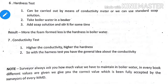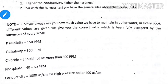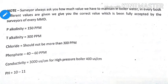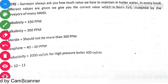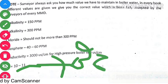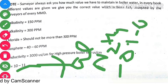The last point is the conductivity test. Higher hardness gives a general indication of conductivity. The standard values to maintain in the boiler water are: P-alkalinity minimum 150 ppm, total alkalinity 300 ppm, chloride 300 ppm, phosphate 40 to 60 ppm, conductivity 3000, pH 10 to 11 (alkaline), and hydrazine 0.1 to 0.2 ppm.